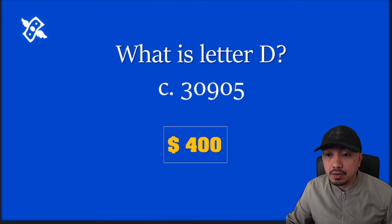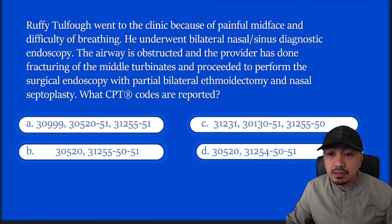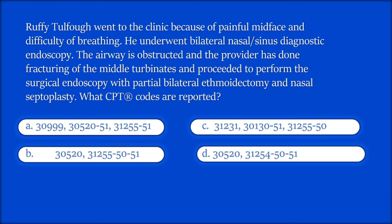Let's proceed to your third question for $600. Rofi Tulfo went to the clinic because of painful midface and difficulty of breathing. He underwent bilateral nasal sinus diagnostic endoscopy. The airway is obstructed and the provider has done fracturing of the middle turbinates, then proceeded to perform surgical endoscopy with partial bilateral ethmoidectomy and nasal septoplasty. What CPT codes are reported? Timer starts now.